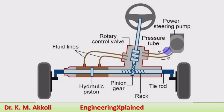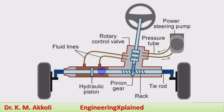First we will look at the main components: power steering pump, pressure tubes, rotary control valve, fluid lines connecting from that valve to the piston, hydraulic piston, pinion gear and rack, and tie rods to connect to the wheels of the vehicle.